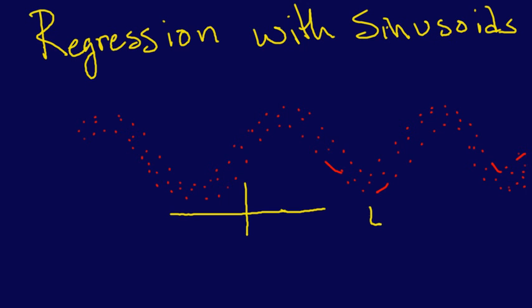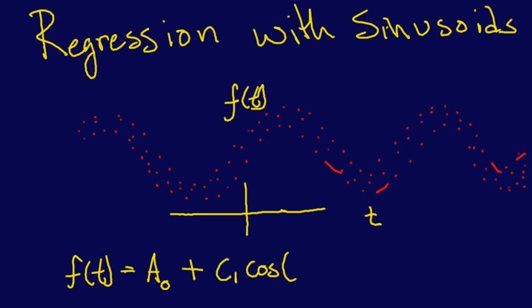So let's say this axis is t, and this axis is f of t. So we could say, well, f of t equals a naught plus c1 cosine omega t plus theta.